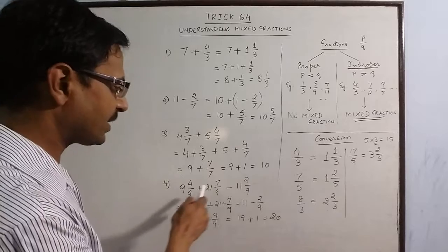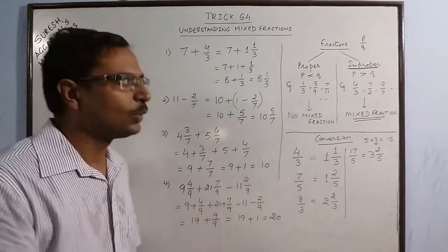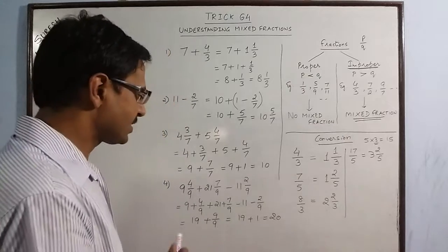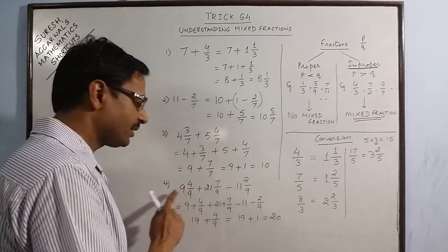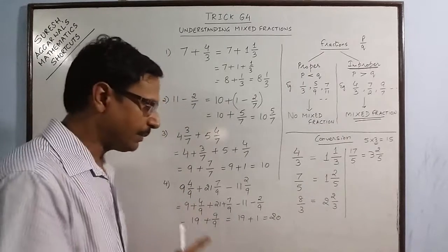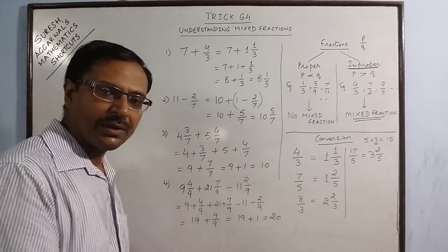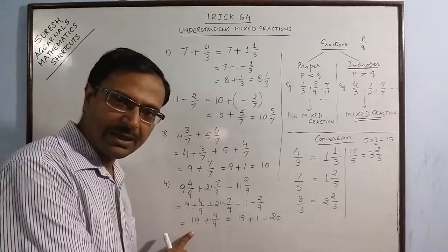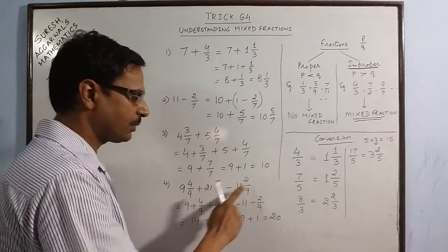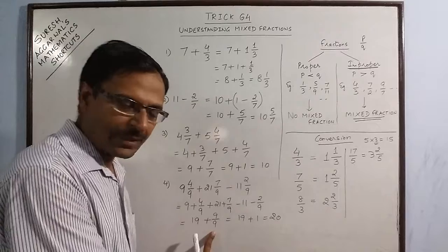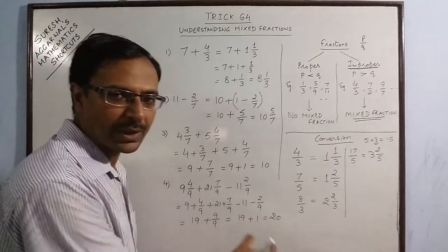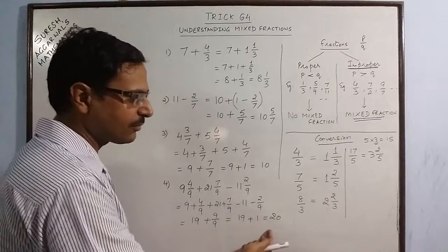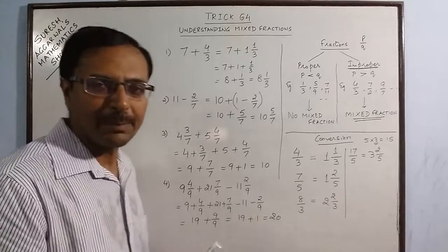We do not need to convert the mixed fractions into proper or improper fractions. Just split the mixed fraction into two parts by putting a plus sign in between. Then all the natural numbers obtained are to be added separately and all the fractions obtained are to be added separately, and the two results can be written together to obtain the answer either in natural number form or in mixed fraction form.